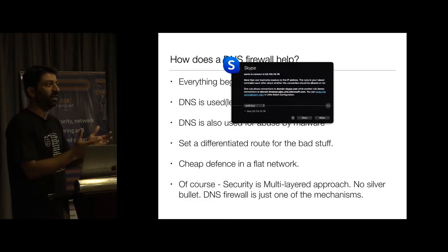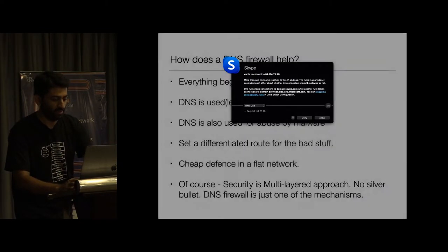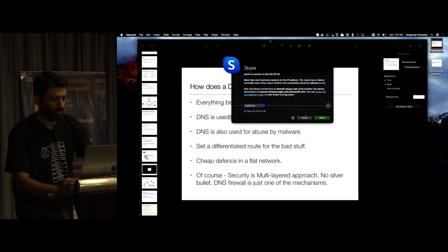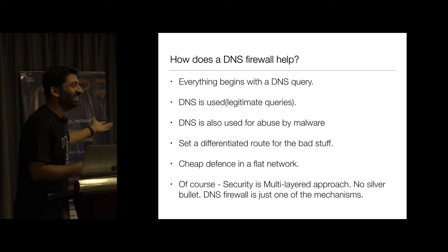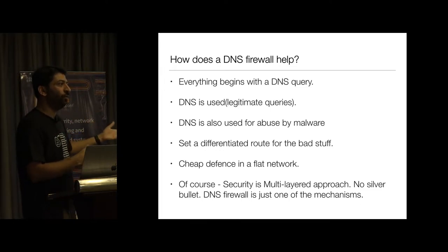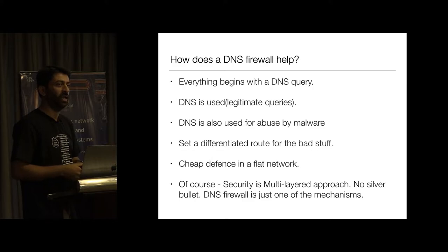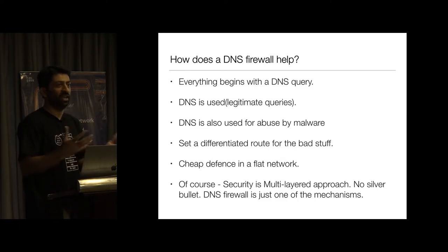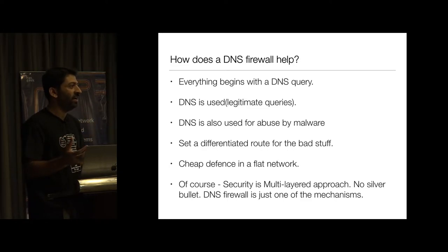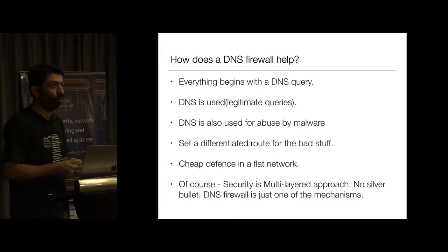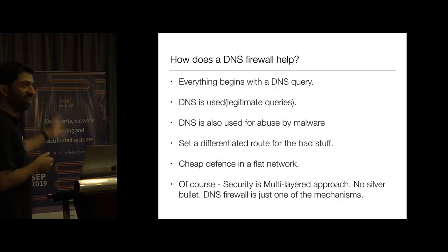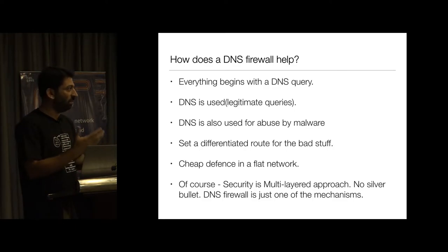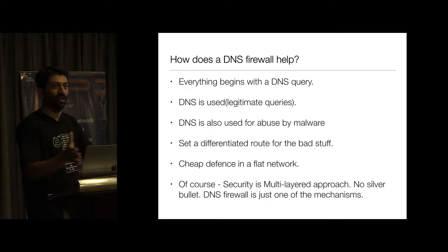It sets a differentiated route for DNS queries. Most importantly for the MSME networks we have deployed this on, it is cheap defense — without having to invest in a full-fledged firewall or having the budget for something like PFSense. This typically runs on a Raspberry Pi, so there is a low cost barrier and it is pretty simple to implement. I want to highlight that security is a multi-tiered approach — this is one key element that can go into your network defense, not the only one.